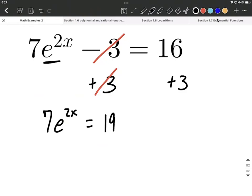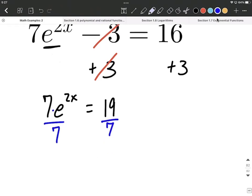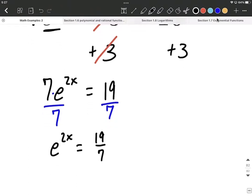Remember our goal is still get e to the 2x by itself. So the next thing I'm going to do is divide both sides by 7 because that 7 was attached with multiplication to the e to the 2x. This will put e to the 2x on the left-hand side all by itself. We aren't going to be able to reduce down 19 over 7, but that's okay.